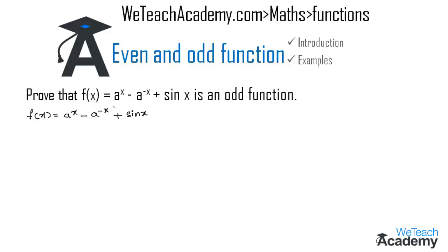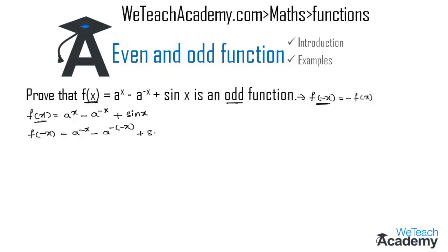For f(x) to be an odd function it must satisfy the condition f(-x) = -f(x). Now let us find f(-x) by replacing x with -x. So we get f(-x) = a⁻ˣ - a^(-(-x)) + sin(-x), which is a⁻ˣ - aˣ + sin(-x). Since sin(-x) = -sin(x), we get a⁻ˣ - aˣ - sin(x).